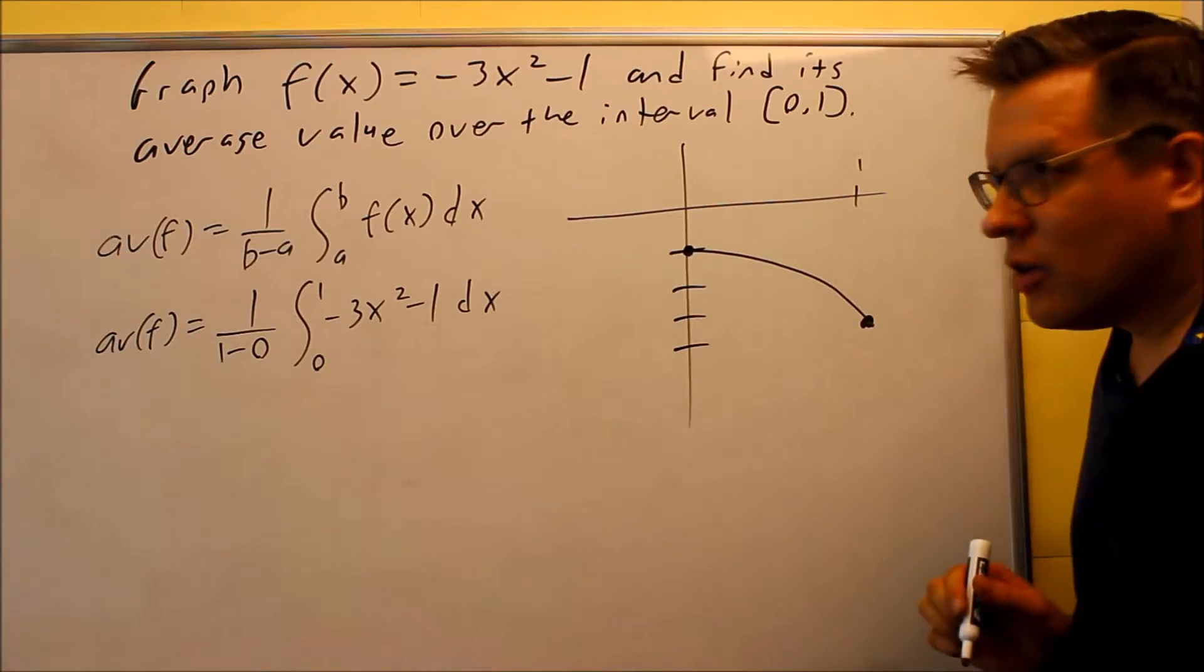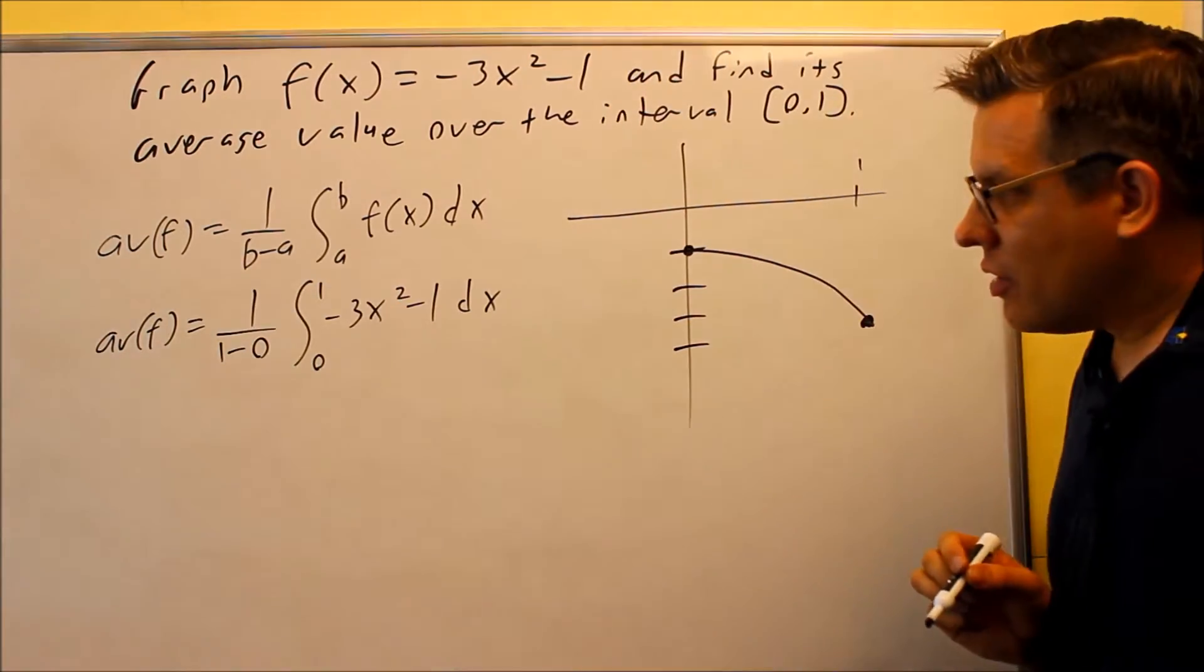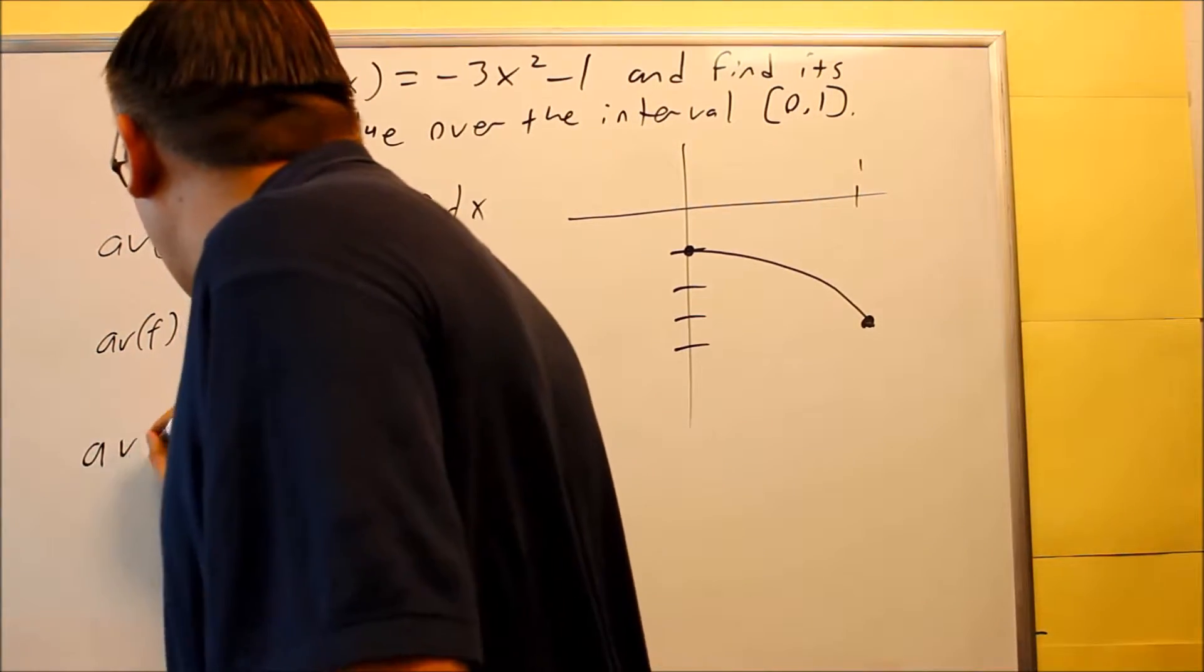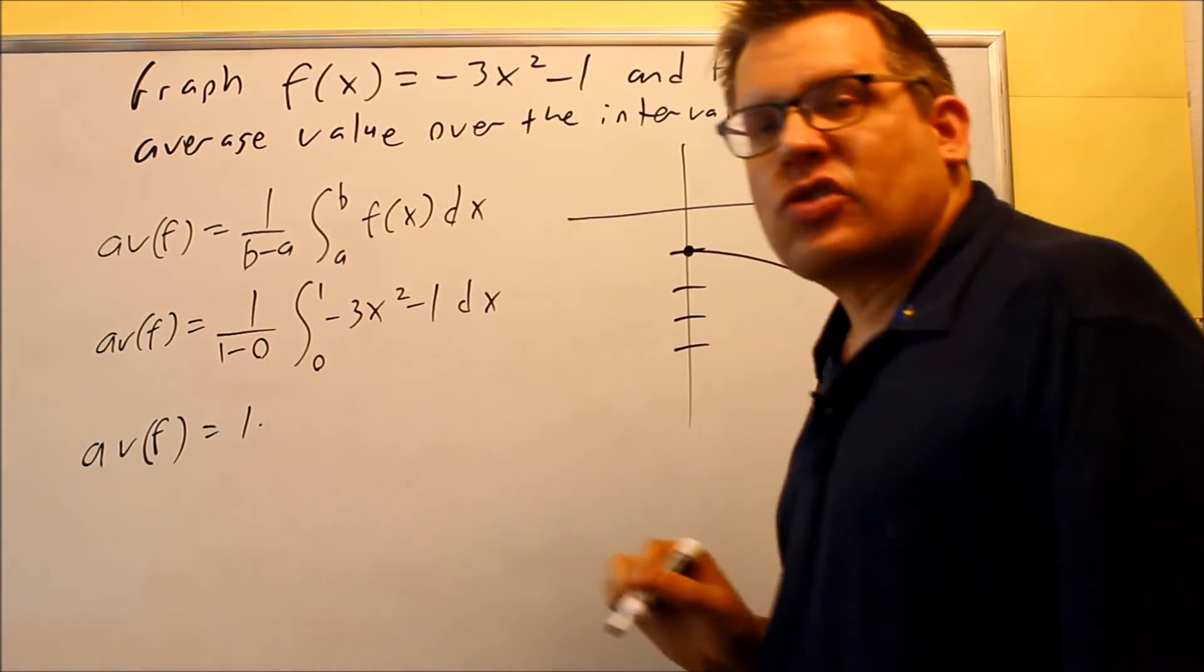So this is the setup, what it'll look like. Now this part is just going to turn into a 1, so I don't need that part. So basically my average value function is just going to be, this part here, it's going to be 1 times this integral.